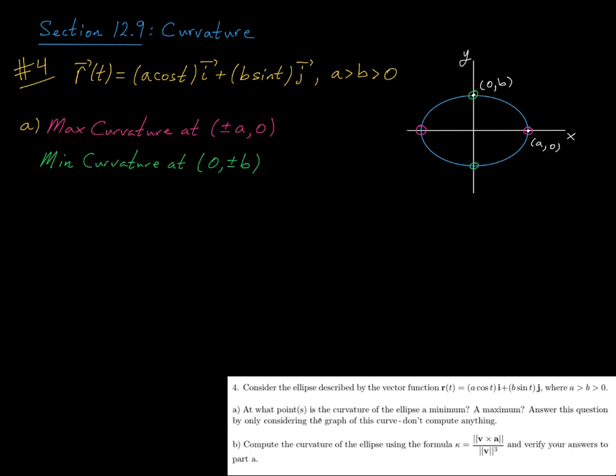Alright, now part b of the question says, compute the curvature of the ellipse using the formula kappa equals the magnitude of v cross a over the magnitude of v cubed, and verify your answers to part a.